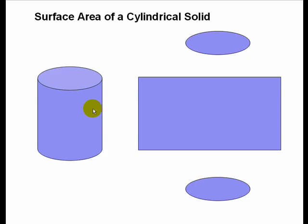If we unwrap the middle part of the cylinder, what we basically get is a rectangle and two circles.